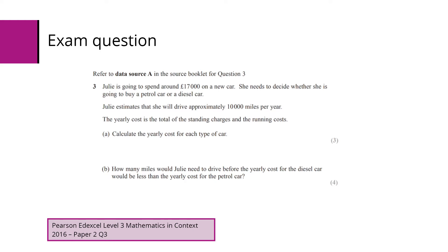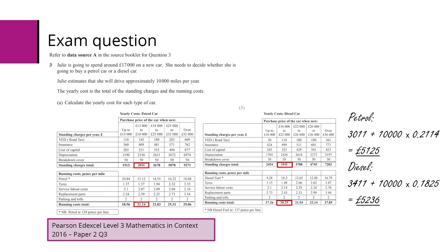Part B: how many miles would Julie need to drive before the yearly cost of the diesel car will be less than the yearly cost of the petrol car? So first of all we've got to make sure they can find the information from the source booklet. So we've got the standing charges and the running costs for each type of car. For petrol, we've got 3,011 plus 10,000 times 0.2114, which gives us a cost of £5,125. The calculation for diesel gives us a cost of £5,236.